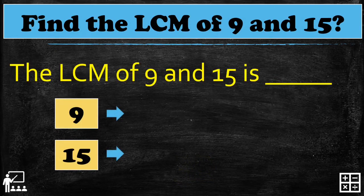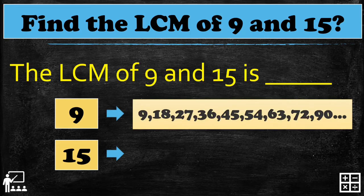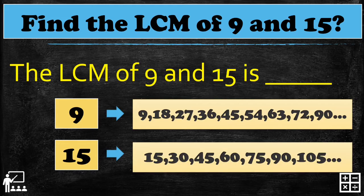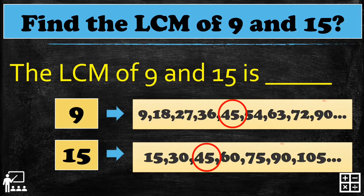Here's another example: find the LCM of 9 and 15. First, list down some multiples of each number. The multiples of 9 are 9, 18, 27, 36, 45, and so on. For 15: 15, 30, 45, 60, 75, 90, 105, and so on. Step 2: find the common multiples — the common multiples here are 45 and 90.